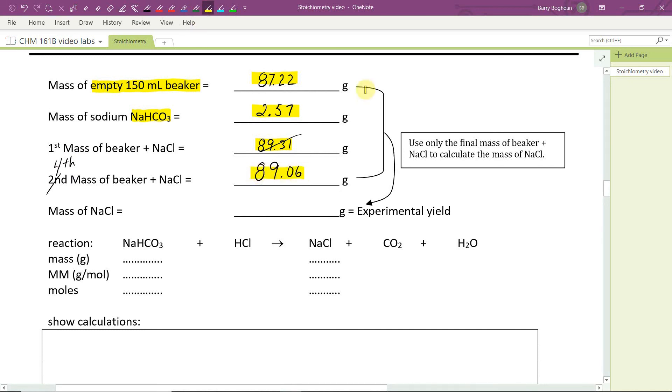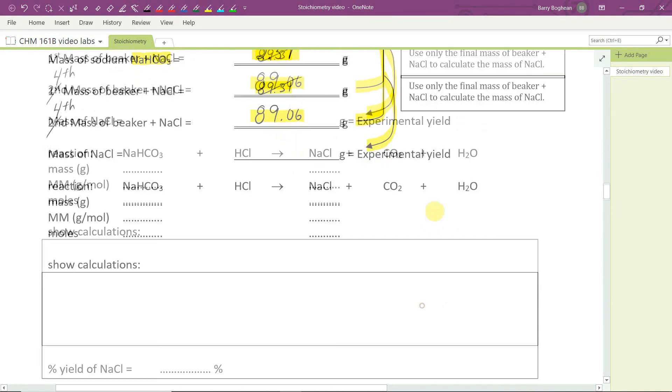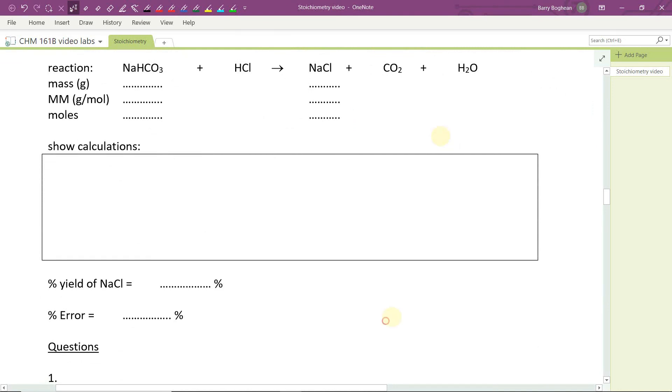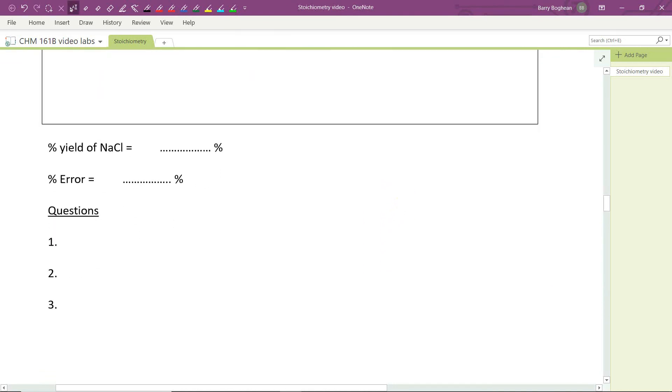By subtracting the final mass and the initial weight of the beaker, we'll get the actual mass of sodium chloride. And from that, you should be able to calculate the rest as shown here. And if you need more space to answer the questions, just attach an additional sheet. That's it for the experiment on stoichiometry.